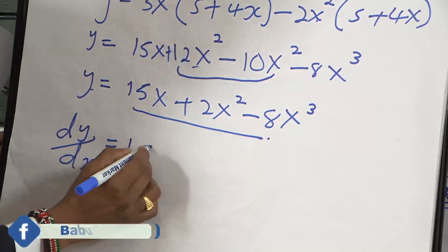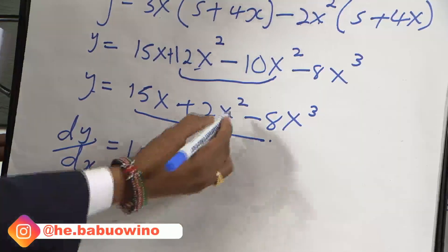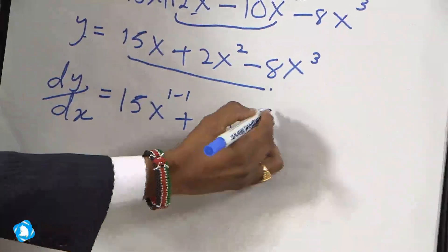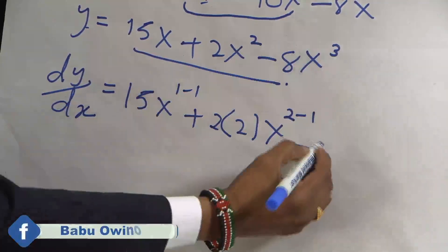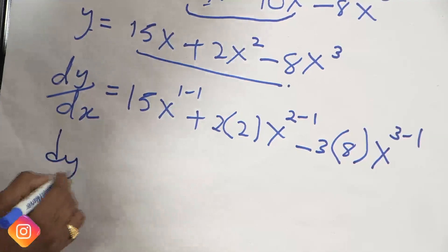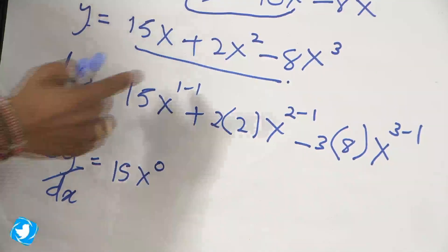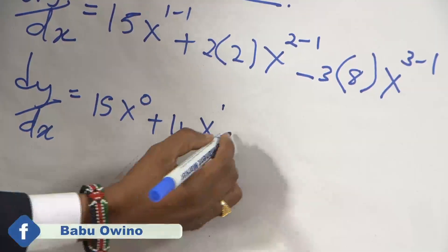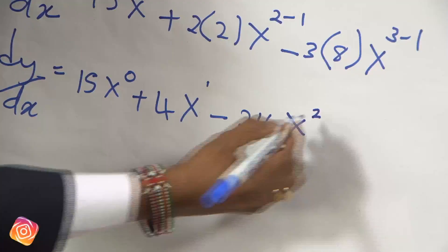In differentiating 15x: x is raised to the power 1, you subtract 1. Then plus 2x squared differentiated — you drop down the power 2, multiply by the constant 2, then x to the power 2 minus 1. Minus: drop down power 3, multiply by 8, x cubed subtract 1. So dy/dx equals 15x raised to the power 0 — 1 minus 1 is 0 — plus 2 times 2 is 4, x to the power 1 — 2 minus 1 is 1 — minus 3 times 8 is 24, x to the power 2 — 3 minus 1 is 2.